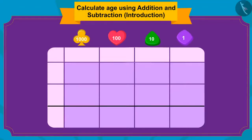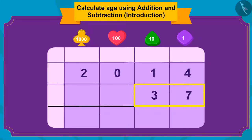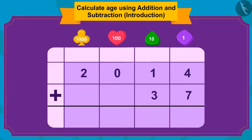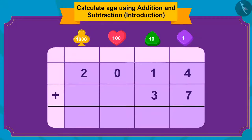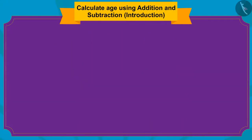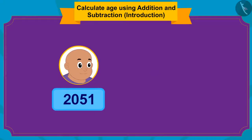Bablu was born in 2014, and the given age is 37. So, we have to add 37 to 2014. If you add 37 to 2014, how much is that? Right — 2051! In this way, Bablu will be 37 years old in 2051.